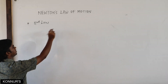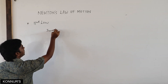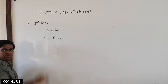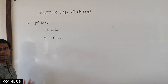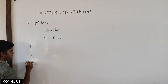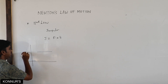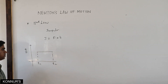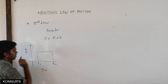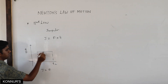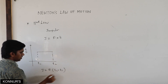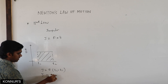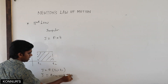One more important thing in the second law is impulse — the effect of force, or how long the force acts. If a constant force F acts from time T1 to T2, impulse equals F times (T2 minus T1). This is simply the area under the force-time curve.